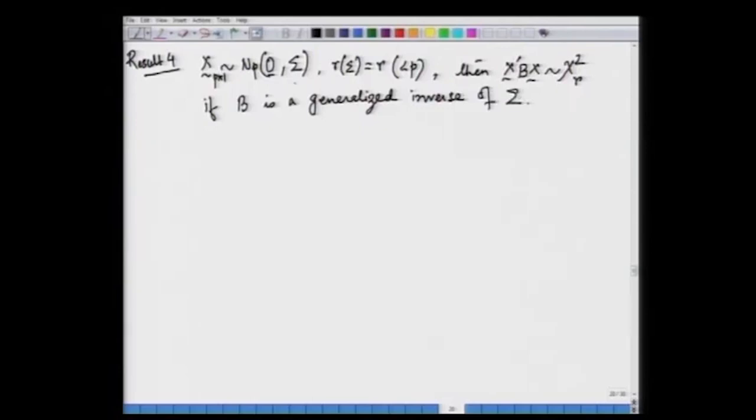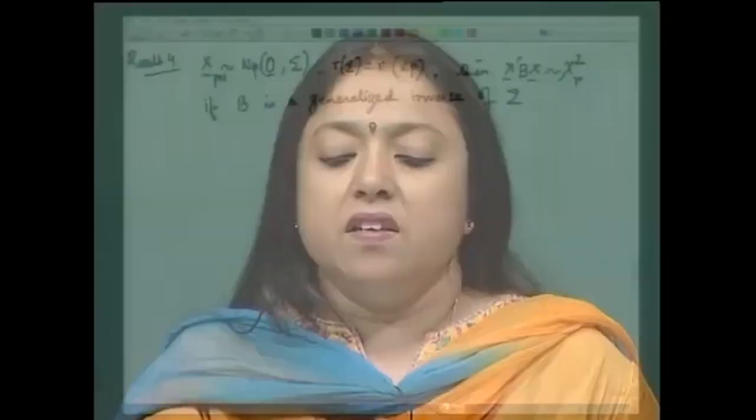We have a situation of a singular multivariate normal distribution here — sigma is positive semi-definite. As we had said in an earlier session, this is a singular multivariate normal distribution where the pdf does not exist because sigma inverse does not exist. So what we are working with is a generalized inverse of sigma.